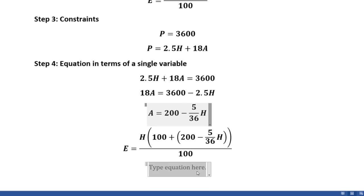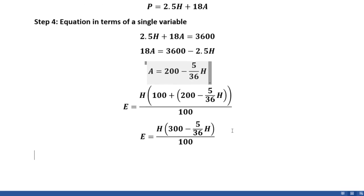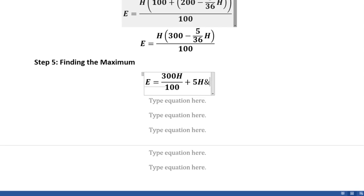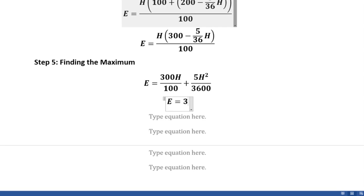After condensing like terms and simplifying, we get E = h·(300 − (5/36)h)/100. Multiplying out gives us E = 300h/100 − 5h²/3600, which is just the expanded version of the equation from step 4. Doing a bit more condensing and simplification gives us E = 3h − h²/720.